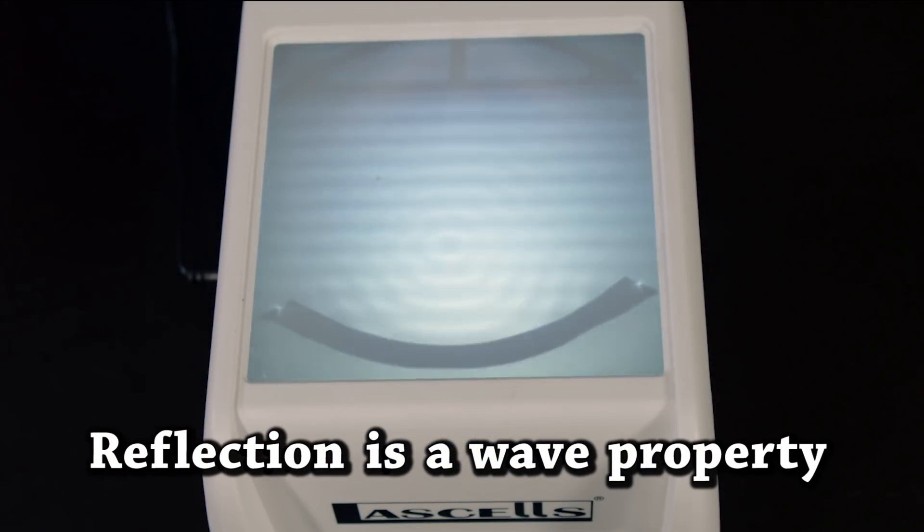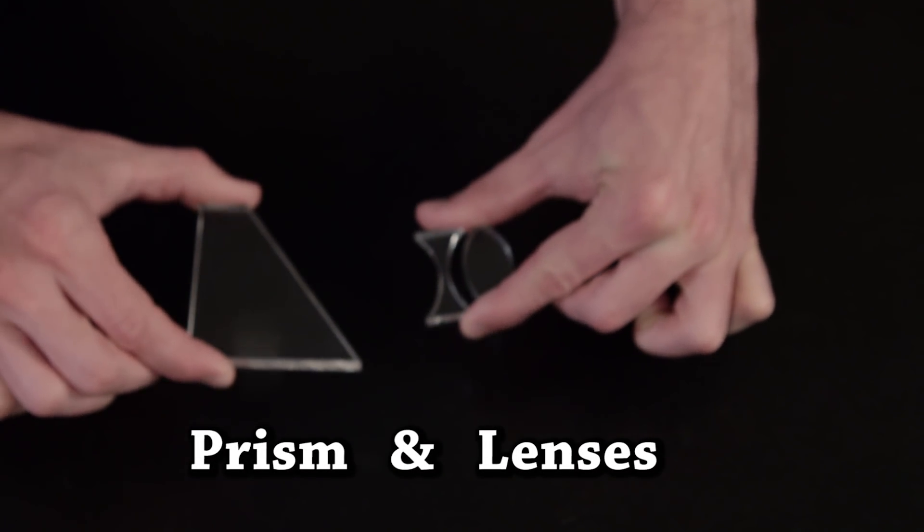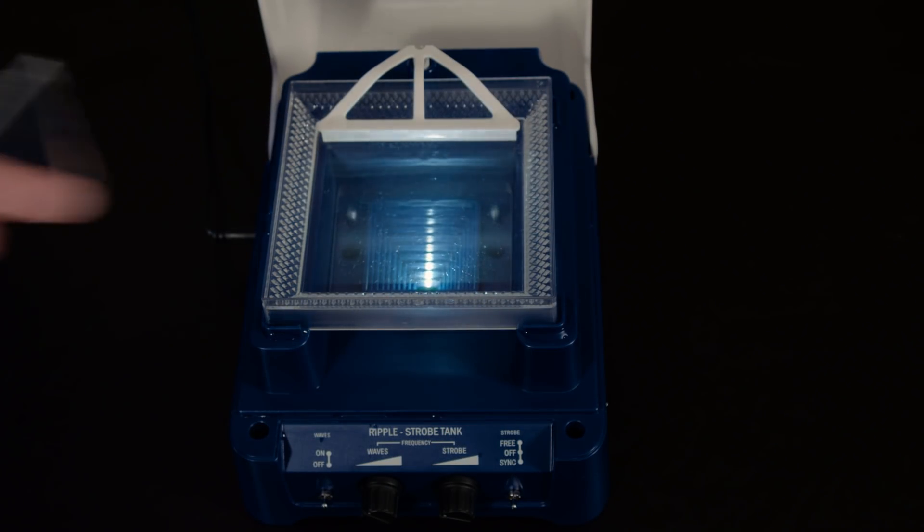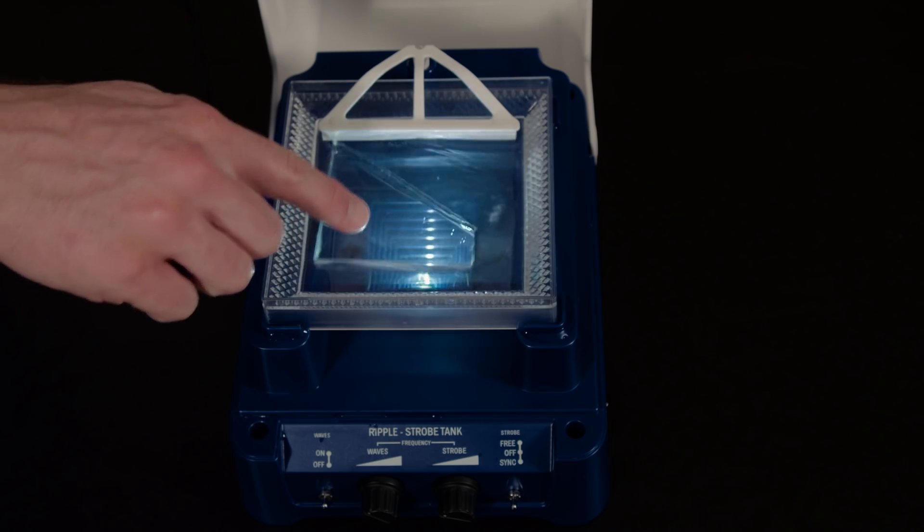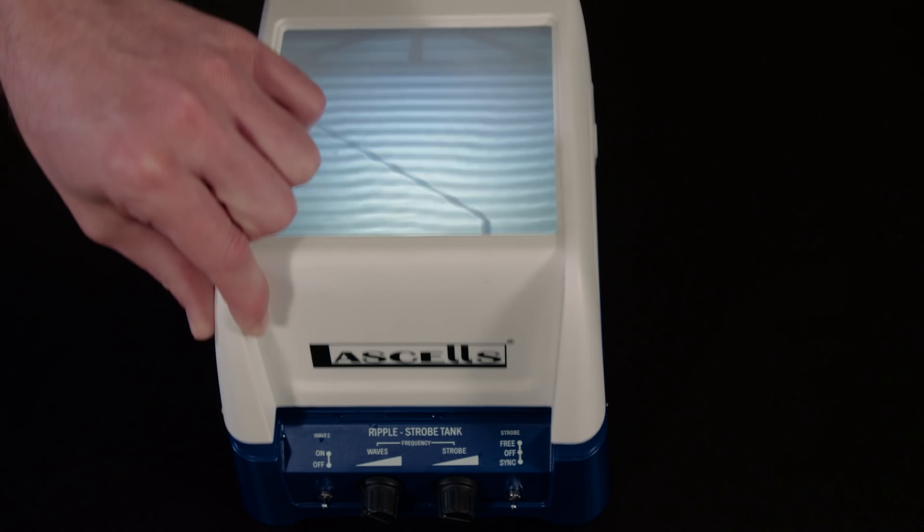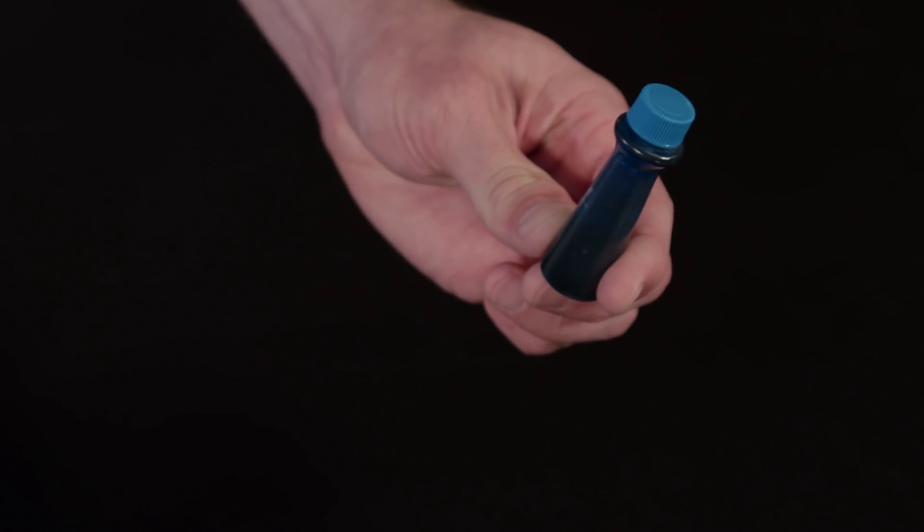Reflection is a wave property. The prism and lenses can demonstrate that refraction is also a wave property and not just limited to light waves. The trick is that the water must be very shallow, just passing over the surface of the prism. Sometimes it's fun to add a little blue dye.